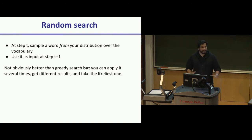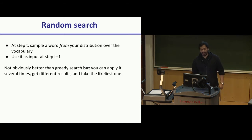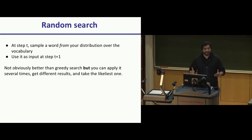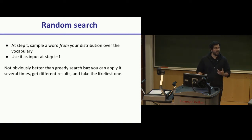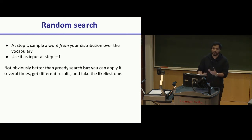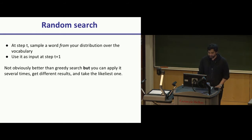Random search: at every time step, you randomly sample a word and say that was the last word seen. It won't perform better than greedy, but you can do this multiple times, ending up with multiple potential sentences, and then pick the most likely one based on the probability your language model calculated while generating the sentence.